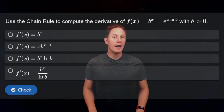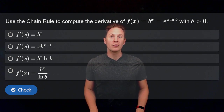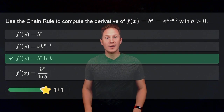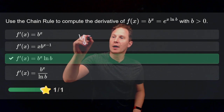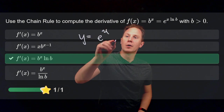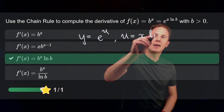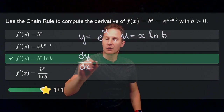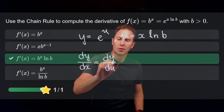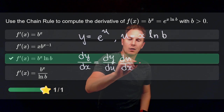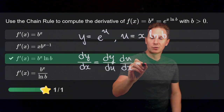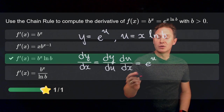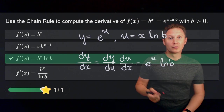Next, use the chain rule to compute the derivative of the exponential function b to the x, where b is any positive base. The derivative is b to the x times the natural logarithm of b. You can obtain this by writing in Leibniz notation y equals e to the u with u being x times ln of b, where ln of b is just a constant. Then dy over dx equals dy over du times du over dx. dy over du is the derivative of e to the u with respect to u, which is itself, and du over dx is the derivative of x times ln of b with respect to x, that is ln of b by the constant multiple rule.